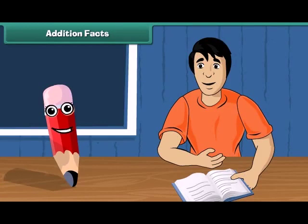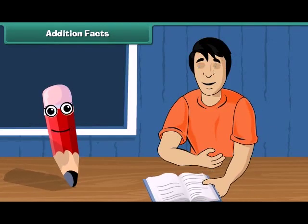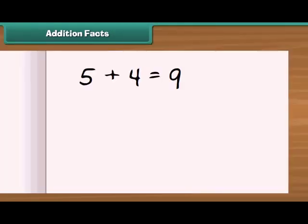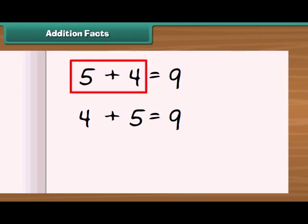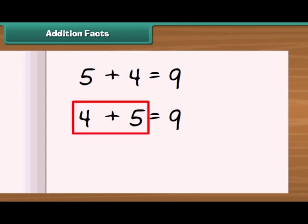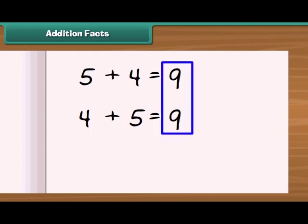Show me your notebook. You know that the sum of 5 and 4 is 9, and if we add 4 to 5, we again get a sum of 9. Whether you add 5 to 4 or 4 to 5, their sum will always be the same. This is known as addition fact.